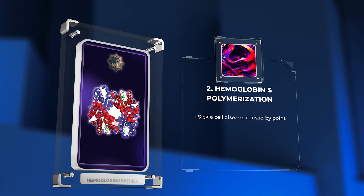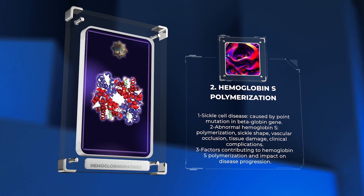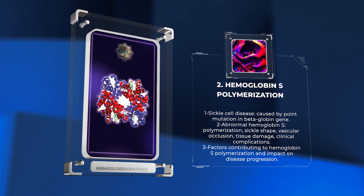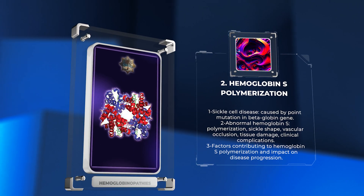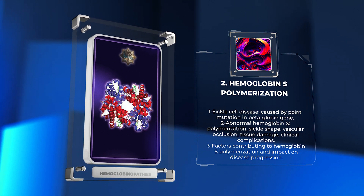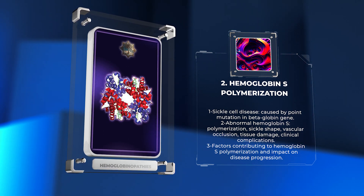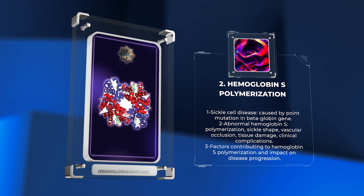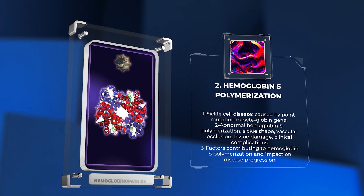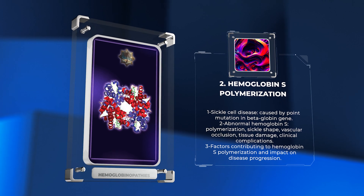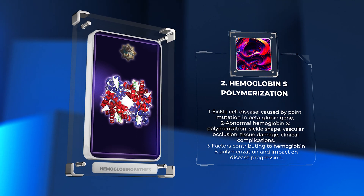Sickle cell disease is one of the most well-known hemoglobinopathies. It is caused by a point mutation in the beta-globin gene, resulting in the formation of abnormal hemoglobin S. The polymerization of hemoglobin S within red blood cells leads to the characteristic sickle shape, causing vascular occlusion, tissue damage, and a range of clinical complications. We will discuss the factors contributing to hemoglobin S polymerization and its impact on disease progression.